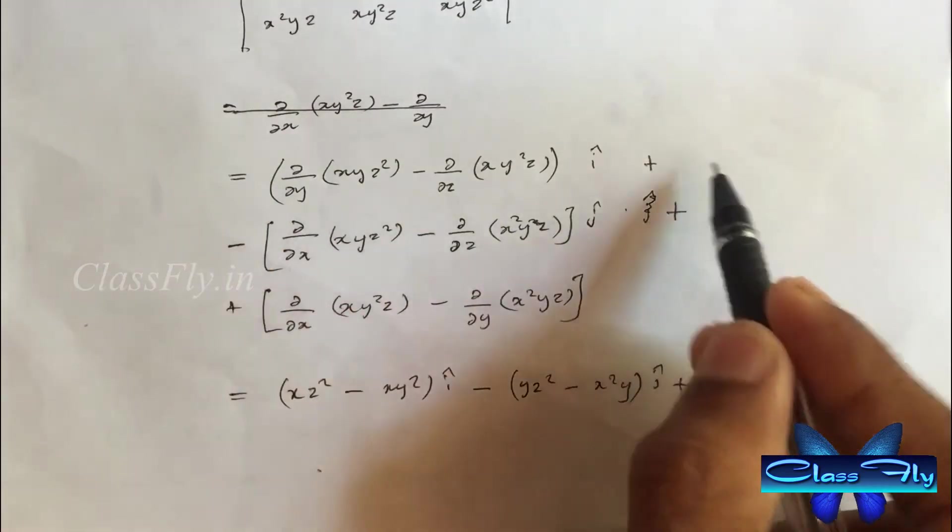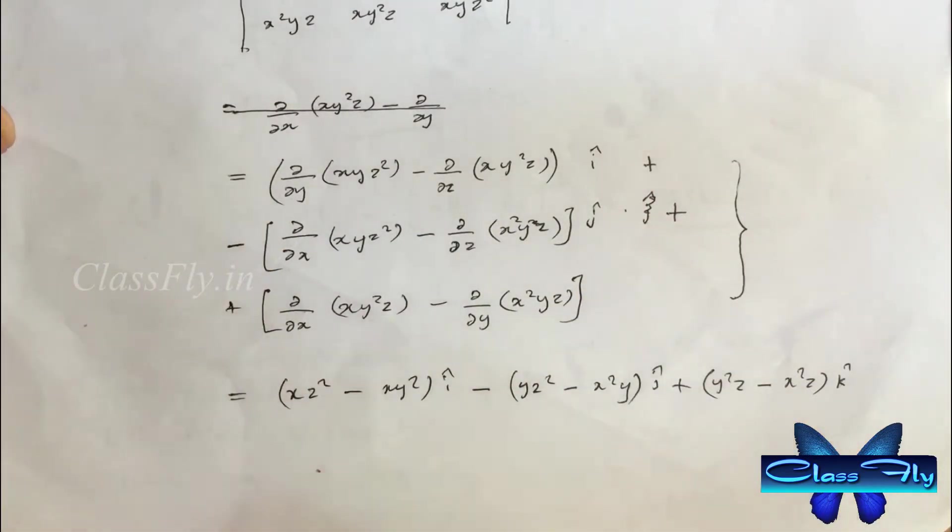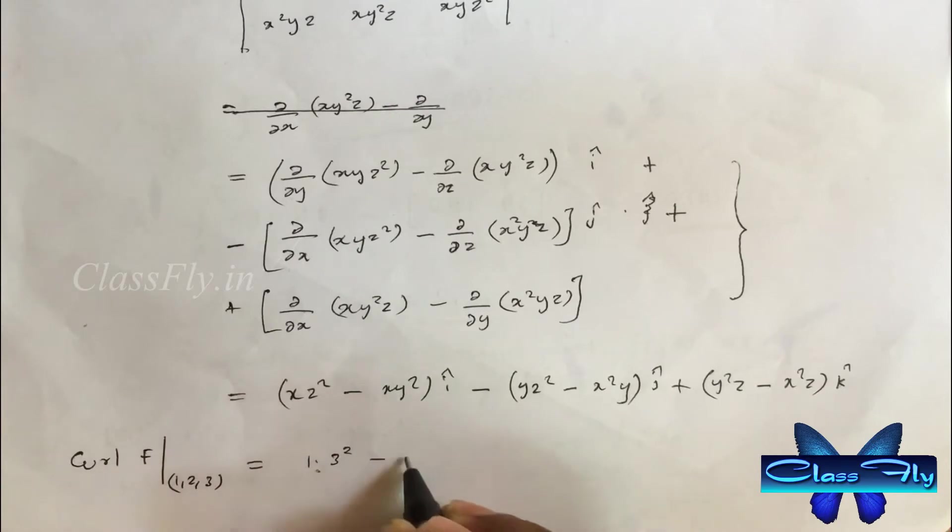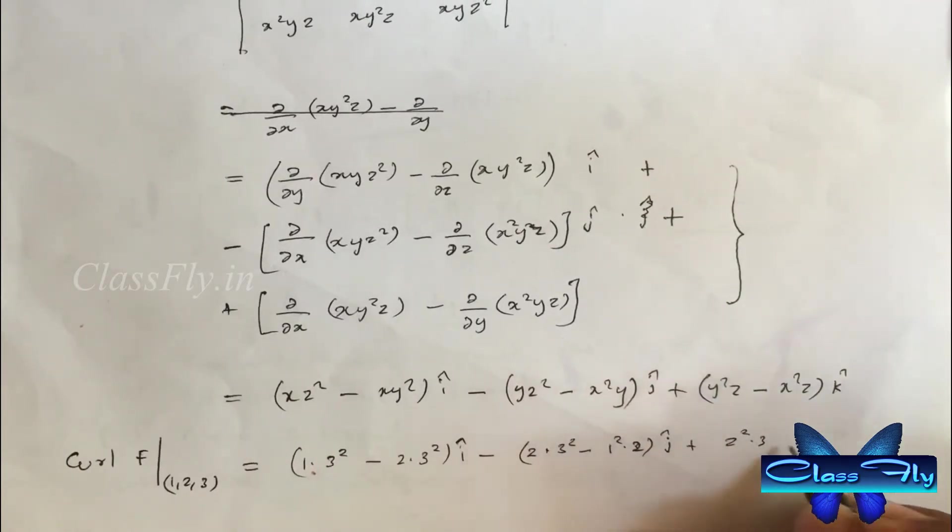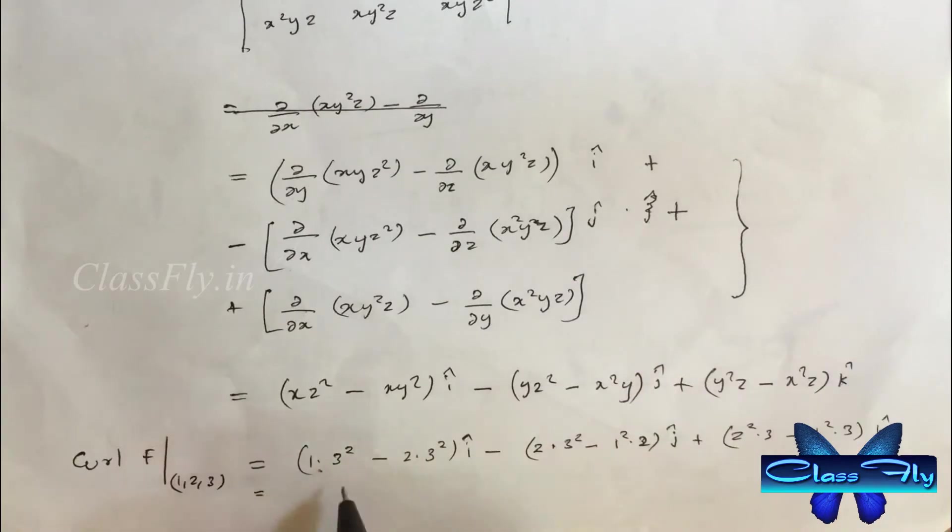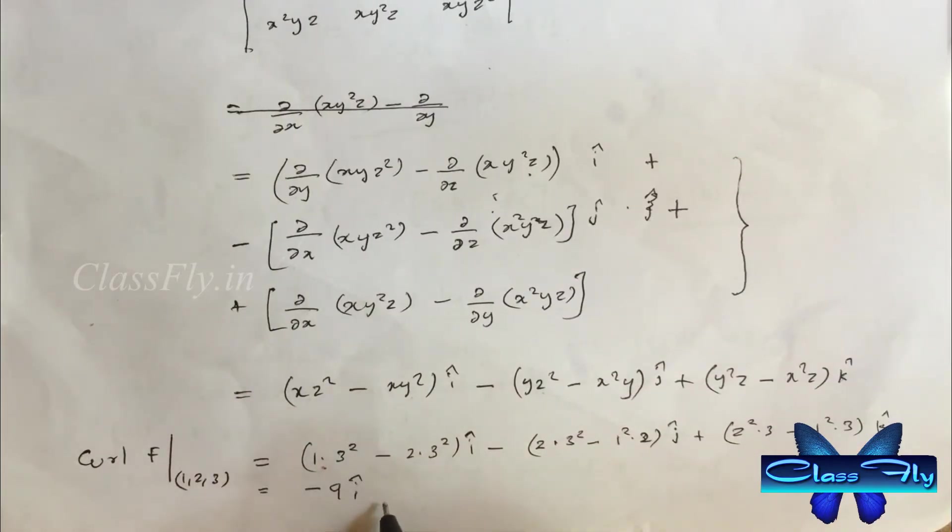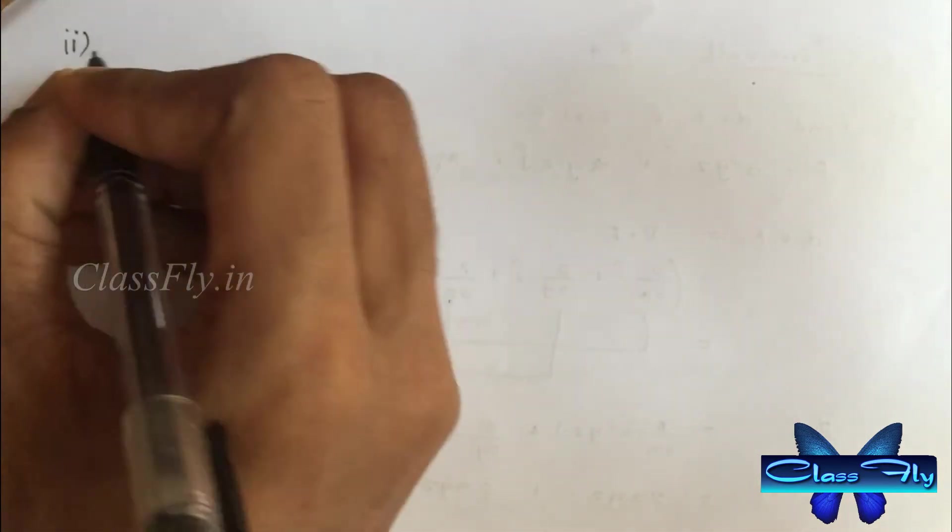After solving the determinant and simplifying we get this equation. Now we have to substitute the point (1, 2, 3) in this equation and finally we obtain minus 9 i cap minus 15 j cap plus 9 k cap.